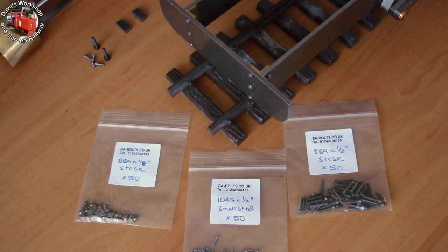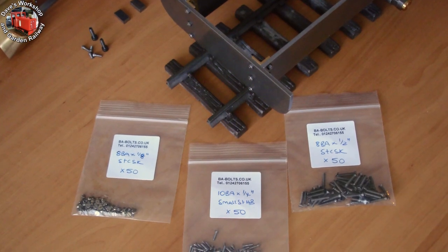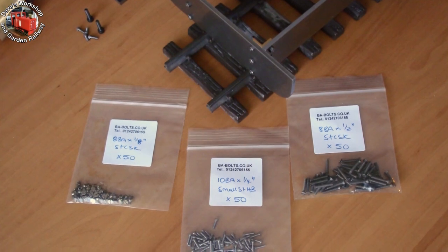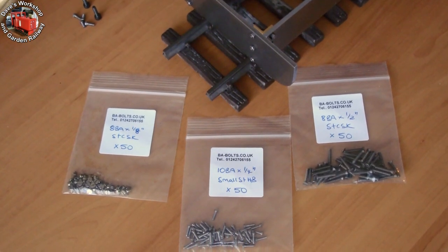My screws order arrived from BA Bolts. These took a while to arrive. They included some short, countersunk 8BA screws to finish attaching the brass angles to the base of the smoke box.